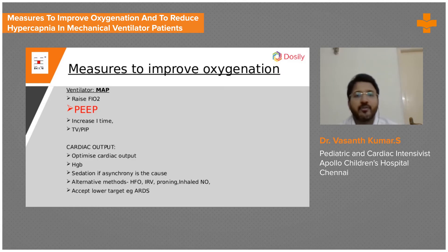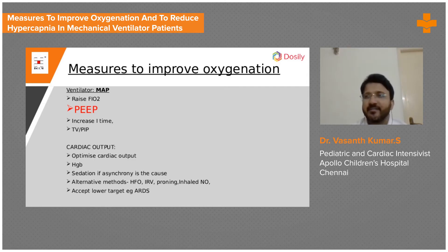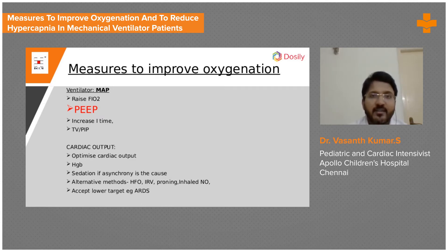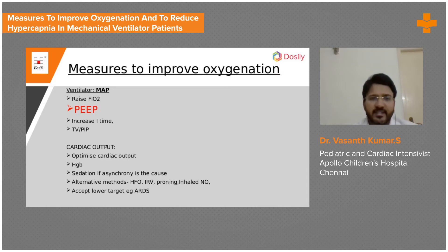Measures to improve oxygenation include ventilator and non-ventilator options. The first immediate step is to increase FiO2 — whenever a patient desaturates, immediately increase FiO2 to 100%. However, this is only a temporary measure because oxygen itself is toxic. Giving 100% FiO2 for 12 hours can damage the lungs; 60% FiO2 for more than 36 hours can cause atelectasis, cytokine release, and free radical injury. By recruiting the lungs with PEEP, you can bring FiO2 levels back down.